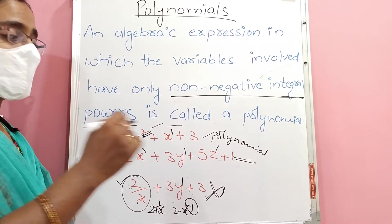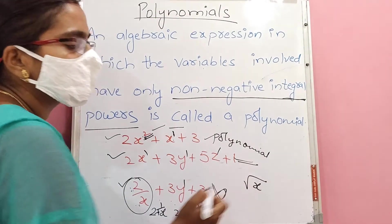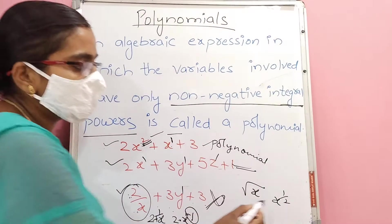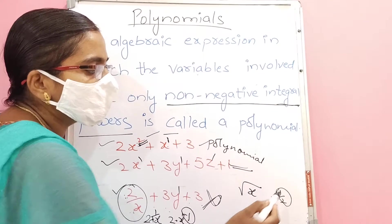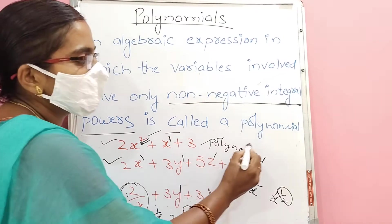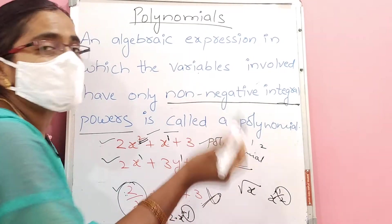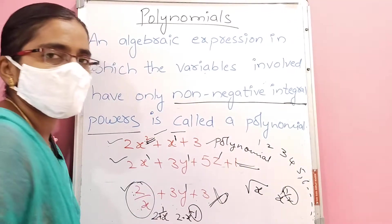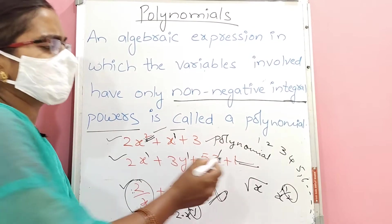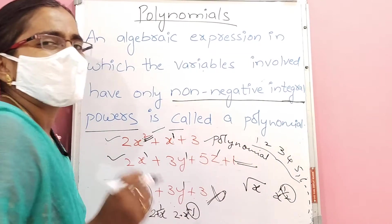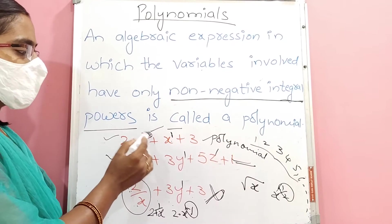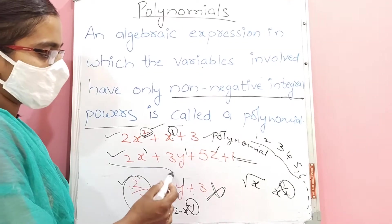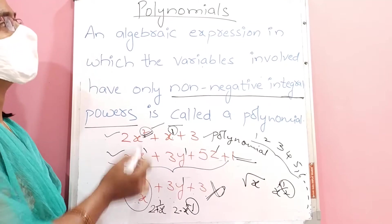Now observe the square root of x, which means x to the power 1/2. This power 1/2 is positive, but it is not an integer. Non-negative integers means 1, 2, 3, 4, 5, 6 and so on — simply natural numbers. So if the power is only a natural number, then only we can say that algebraic expression is a polynomial.